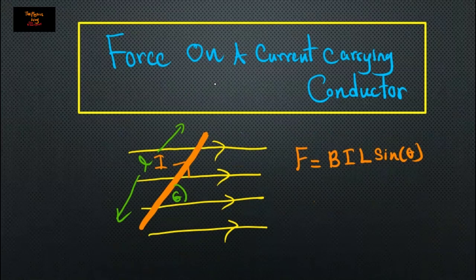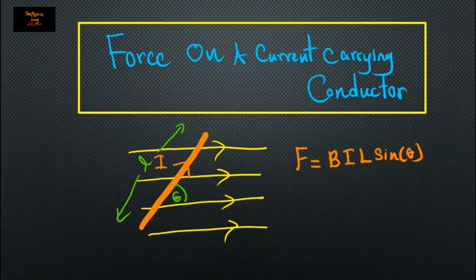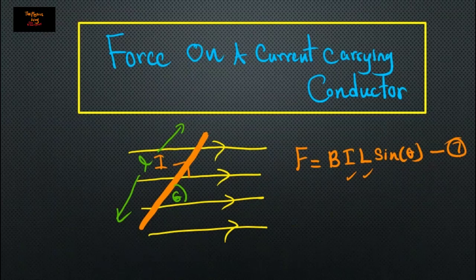Force on a current-carrying conductor: current I passes through the conductor and the length of the wire is l. The force is F equals B I l sine-theta, where I is the current and l is the length of the wire. This is the seventh equation.